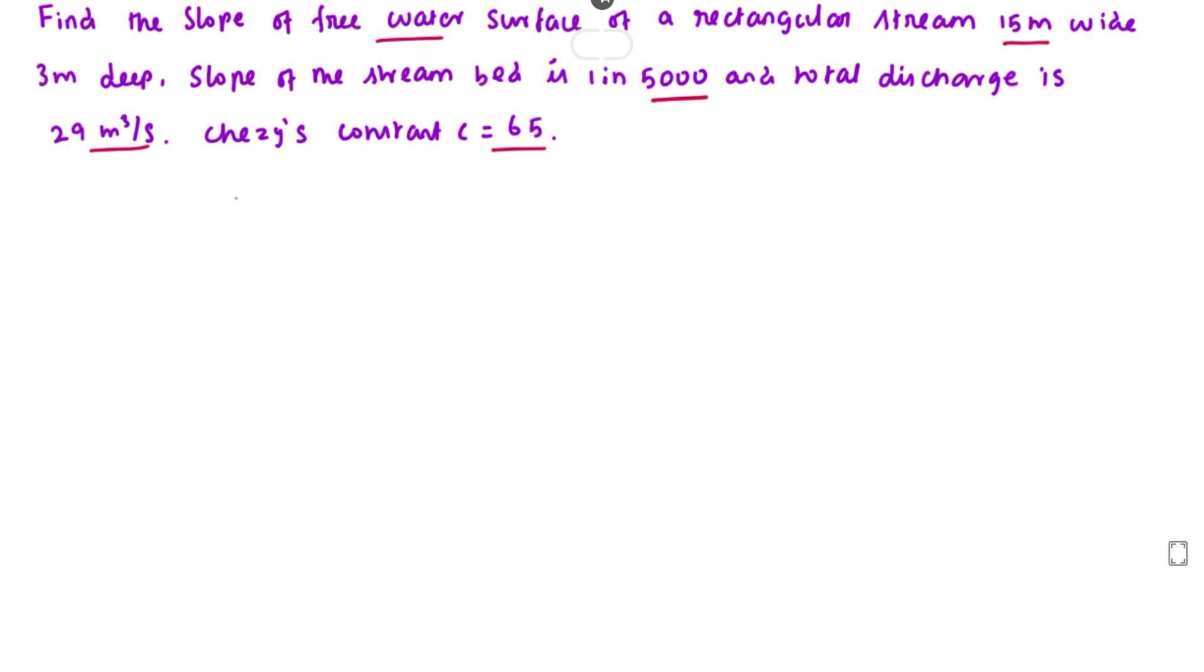We can find the slope of water surface. First, we find the velocity: V = Q/A. The discharge is 29 divided by area, which is 15 times 3 for this rectangular stream.